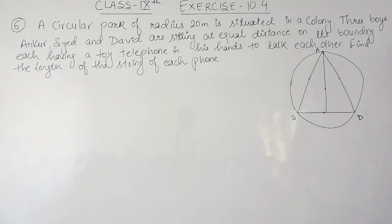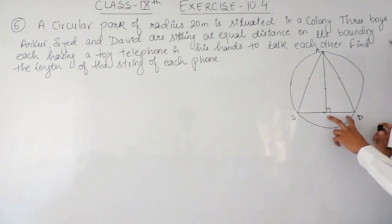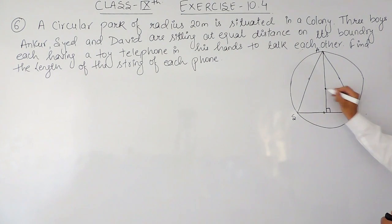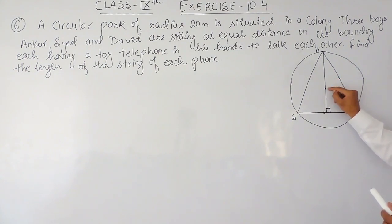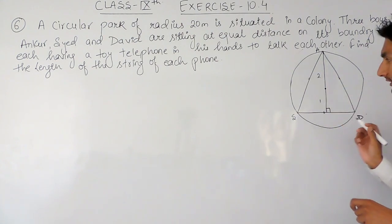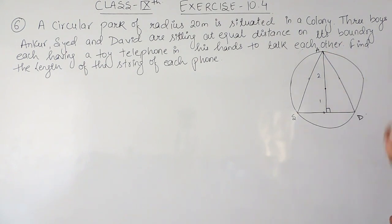For this equilateral triangle, this line will act as its perpendicular as well as its median. On this line there will be a centroid for this triangle. The centroid divides this line in the ratio two to one. This is the theorem we must know — that the centroid in an equilateral triangle divides the median into the ratio two to one.